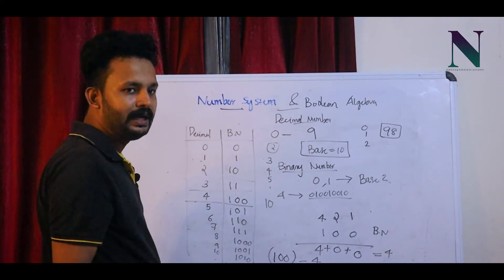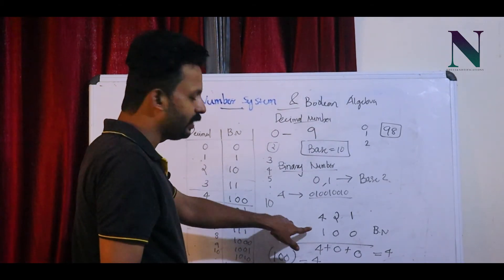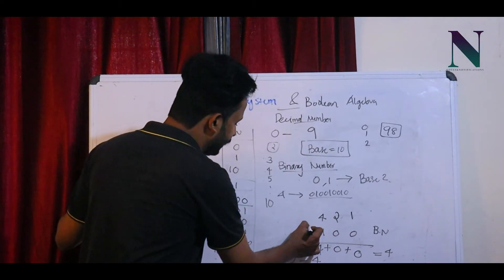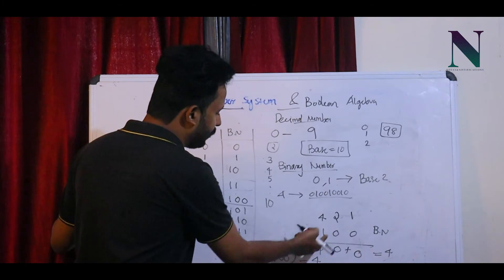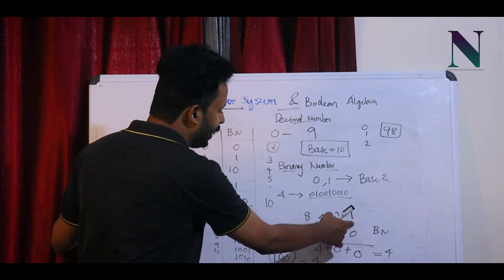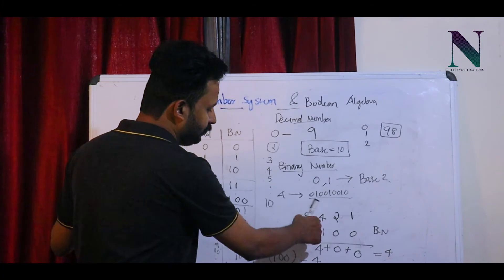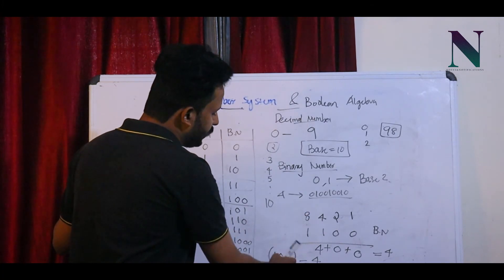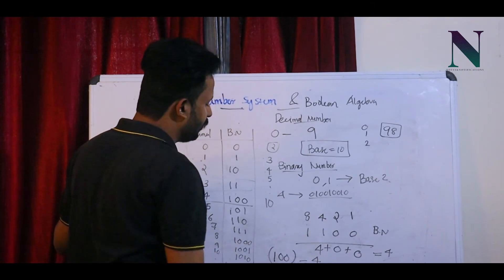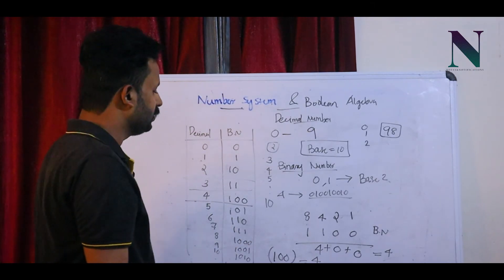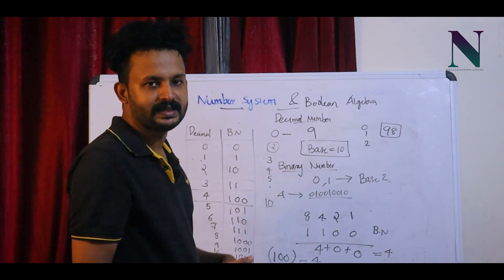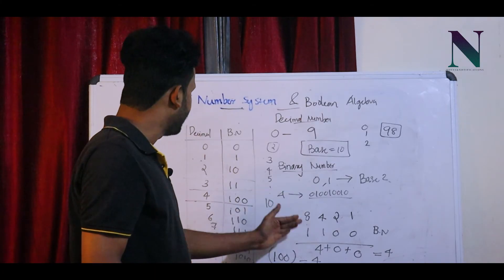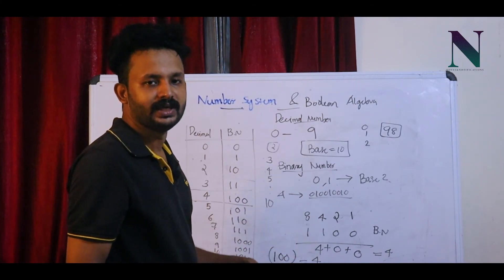Next example: binary number 1100. 1 into 2 is 2; 2 into 2 is 4; 4 into 2 is 8; 8 into 2 is 16. Now: 1 into 8 is 8; 8 plus 4 is 12. So 1100 base 2 equals 12 base 10. This is how we can convert binary to decimal. Binary to decimal conversion.